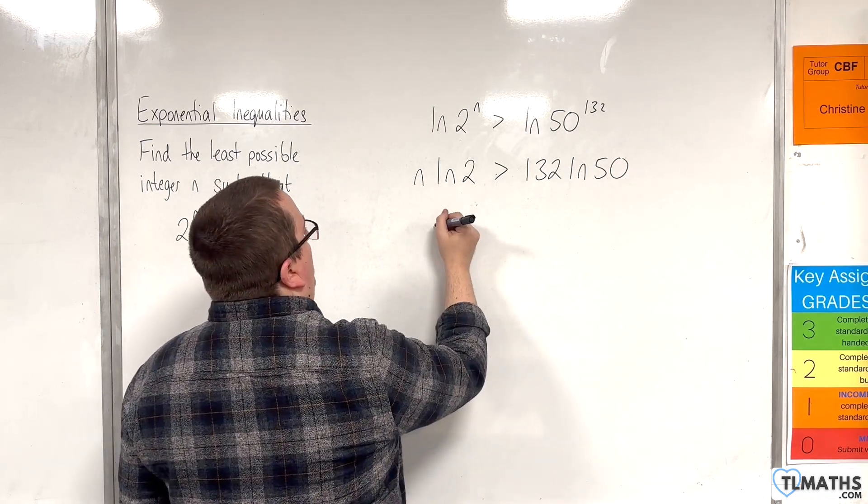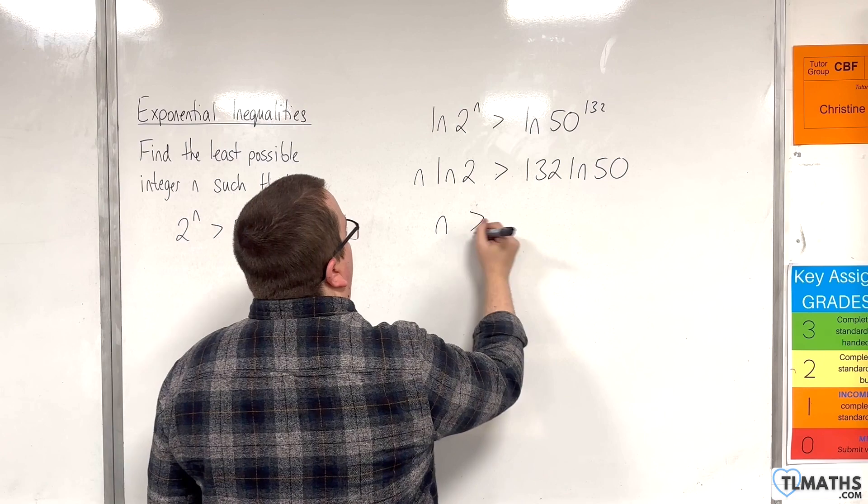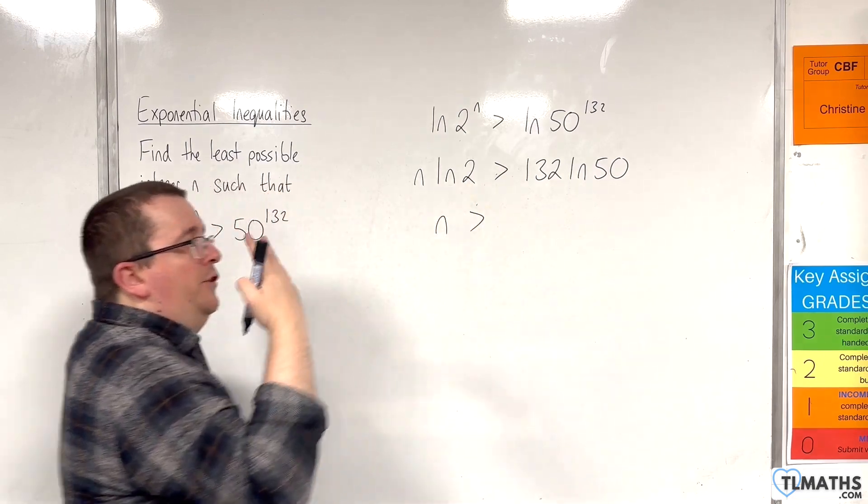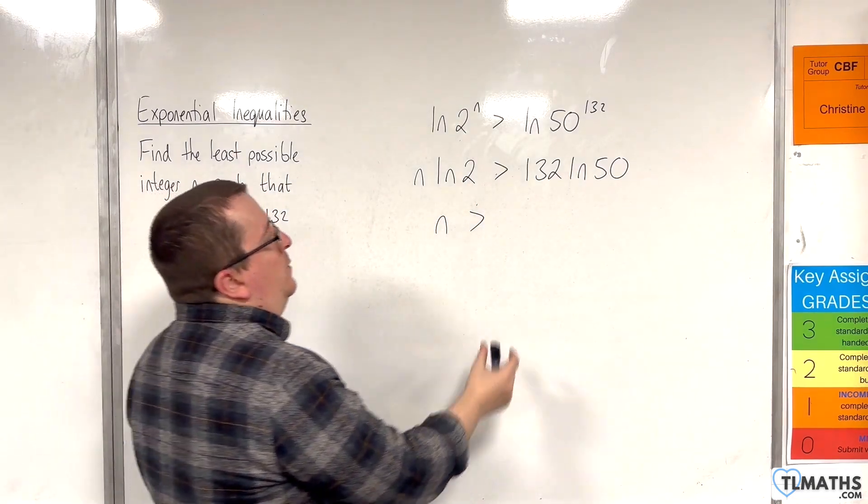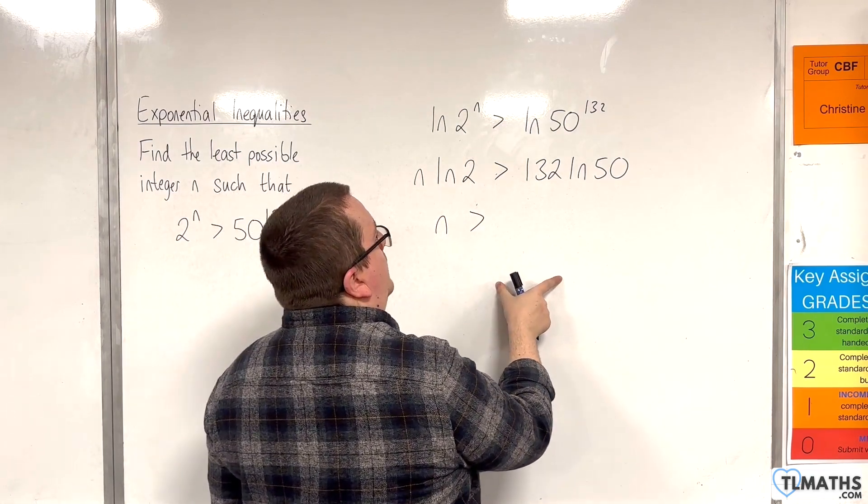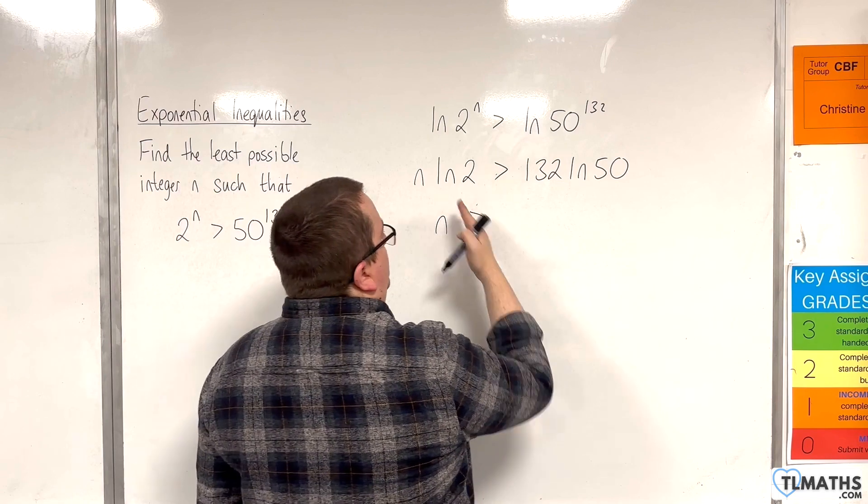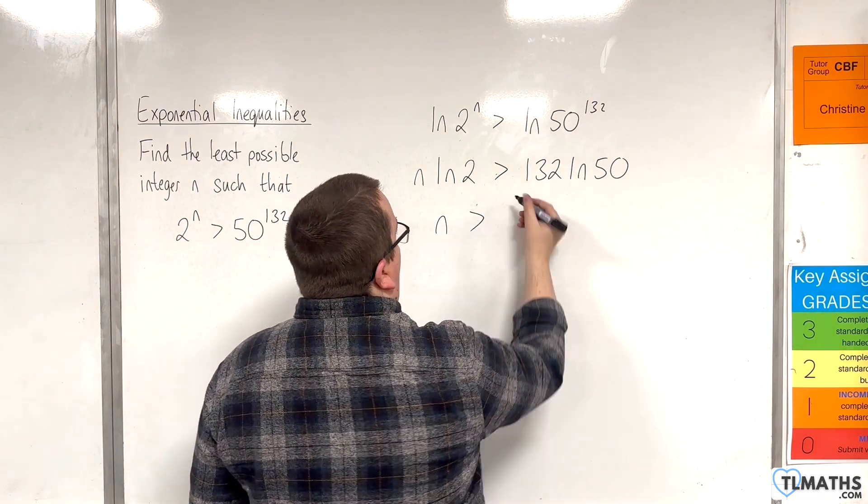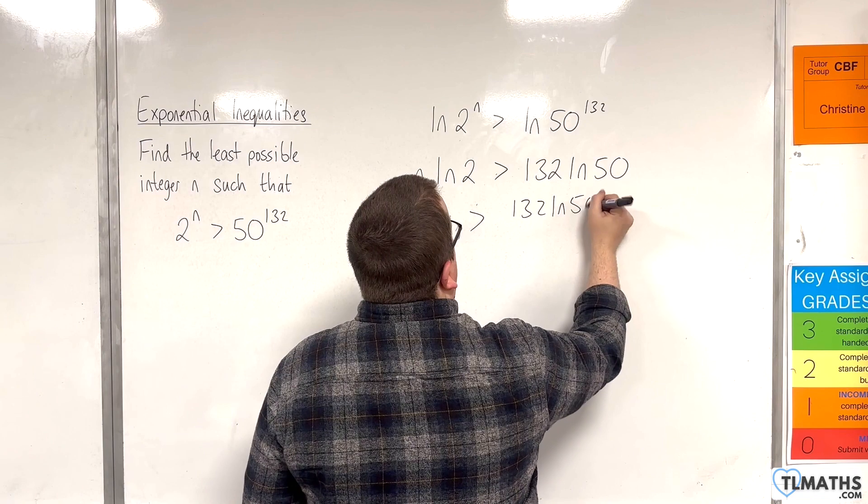Then I can divide through by the natural log of 2. Now, I know that the natural log of 2 isn't negative because, remember, in the previous video, the value here had to be between 0 and 1 in order for it to be negative. So, dividing both sides by log 2 is fine. It won't change the direction of the inequality symbol.